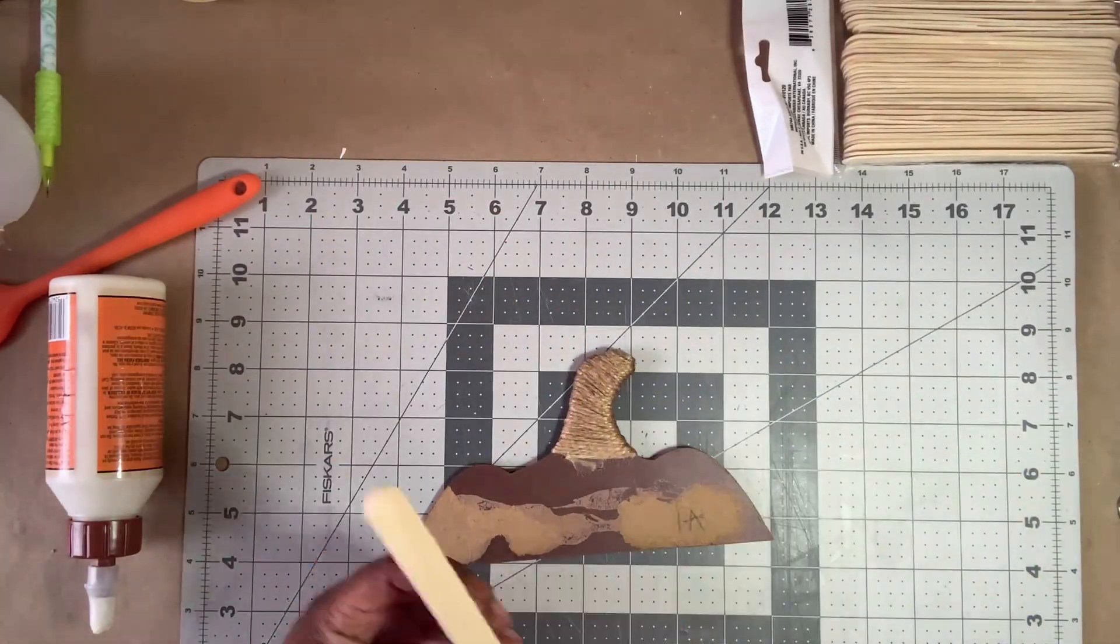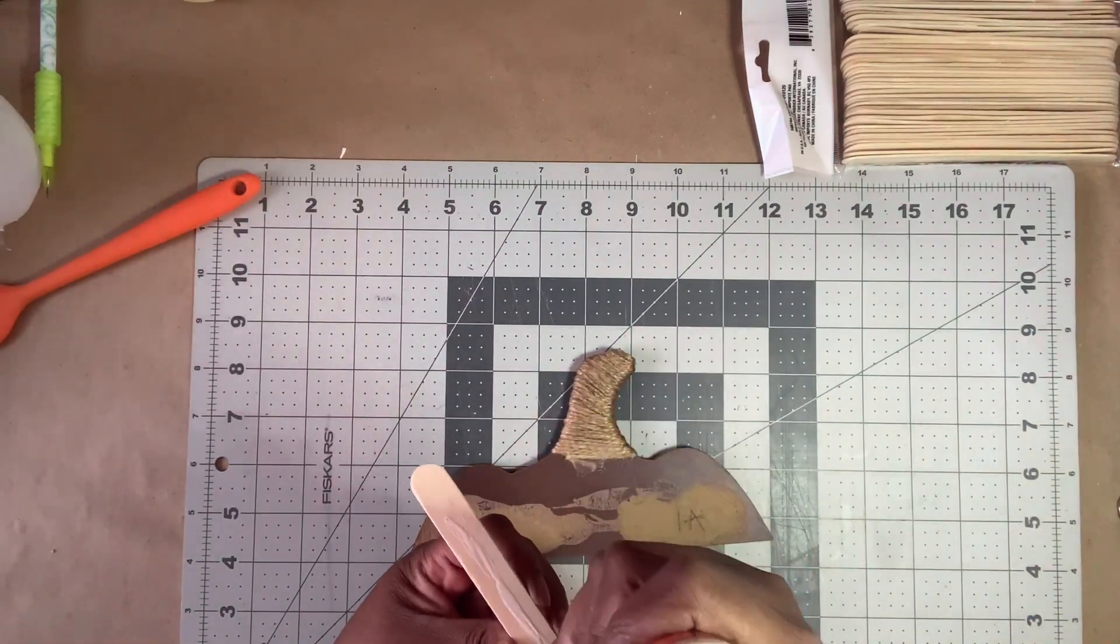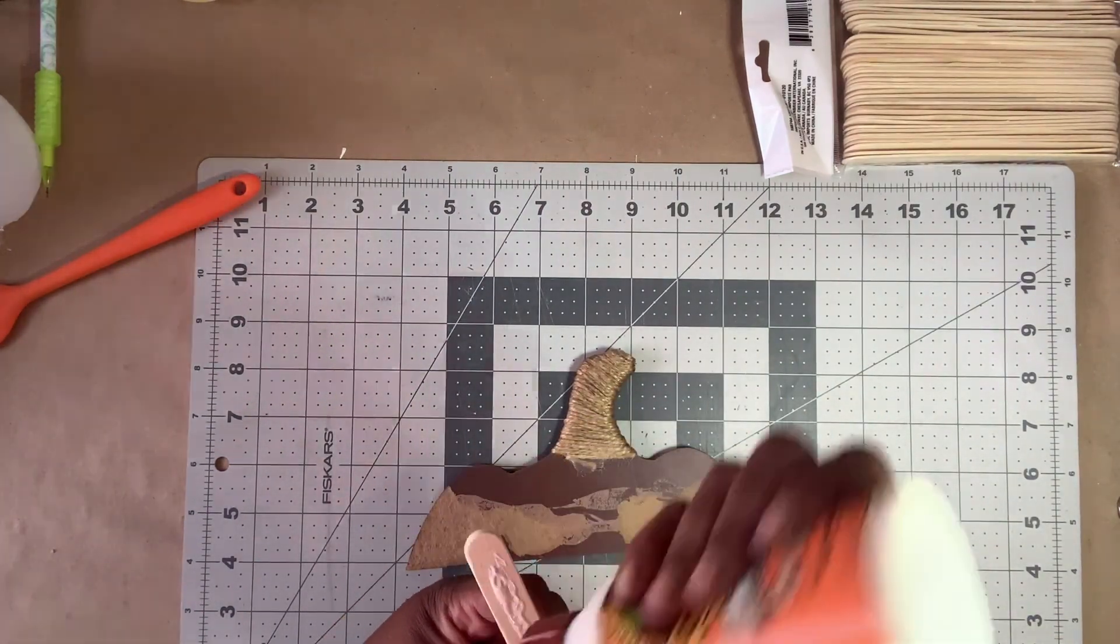Next, I took three of the large craft sticks from Dollar Tree and glued them together, and then glued them on the back of each piece.